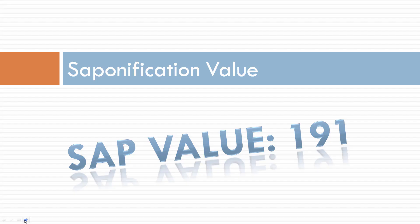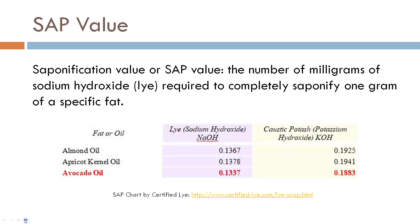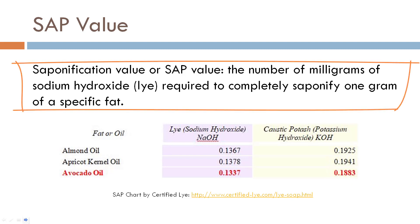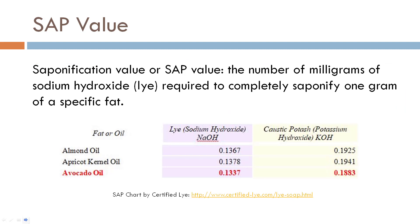Now to calculate our lye we have to understand sap value, or your saponification value. The saponification value is the number of milligrams of sodium hydroxide or lye required to completely saponify one gram of a specific fat. If you are calculating your recipe from scratch you would have to find these sap values — there are a number of charts out there you can refer to. This is a snippet from Certified Lye. You can also refer to the specification sheets from your supplier, and they will have the sap value on there.